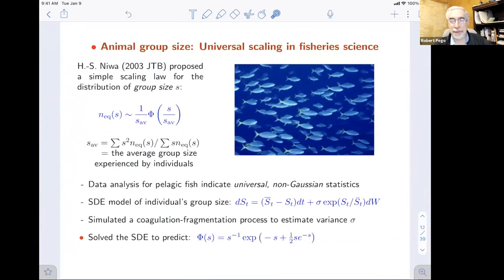So I move on to the animal group size model and discuss the dynamics in that problem. We were motivated by Pierre Degond noticing a very interesting paper of a Japanese fishery scientist named Hiro Sato Iniwa. He was doing data analysis for the fishing industry. Iniwa is a fishery scientist, but he formulated a stochastic differential equation model for the statistics of group size in fish in the mid-ocean, pelagic fish or fish in the middle of the ocean.